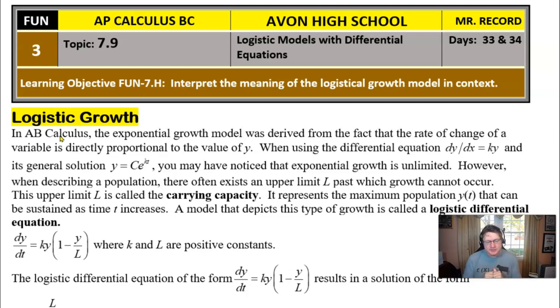That simply represents the maximum population that can be sustained. That kind of model is called the logistic differential equation, and it has a different appearance. If you look over there to the left side of the screen, you'll see that dy/dt = ky multiplied by the quantity (1 - y/L). So a lot more going on with that particular equation than just k times y, and we know that k and L are going to be positive constants in this particular situation.